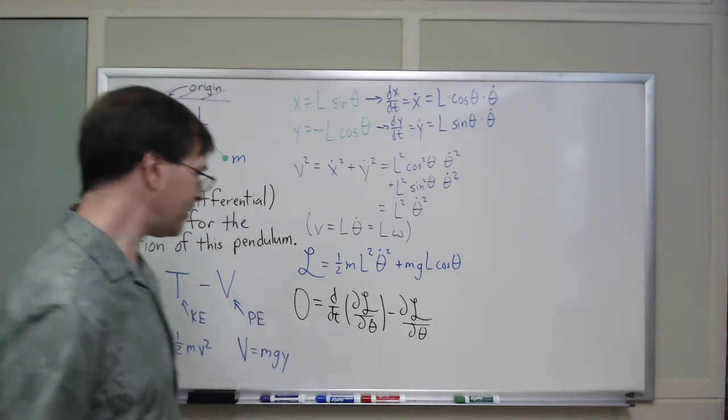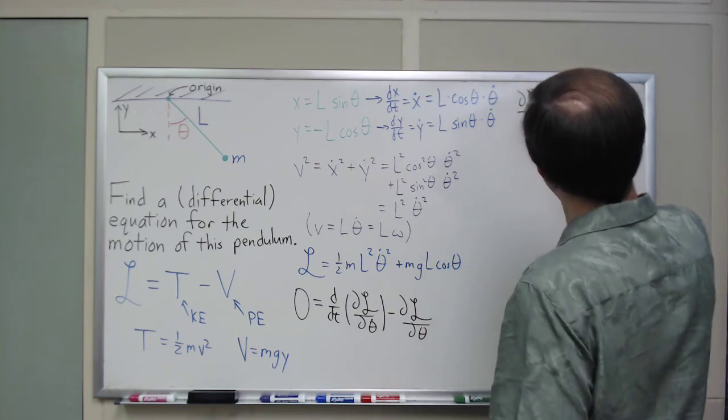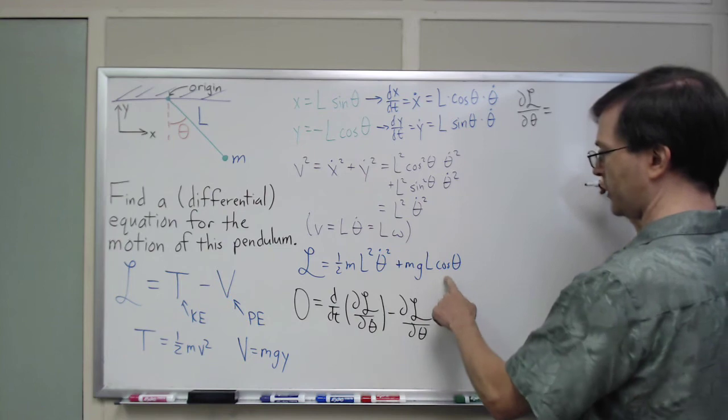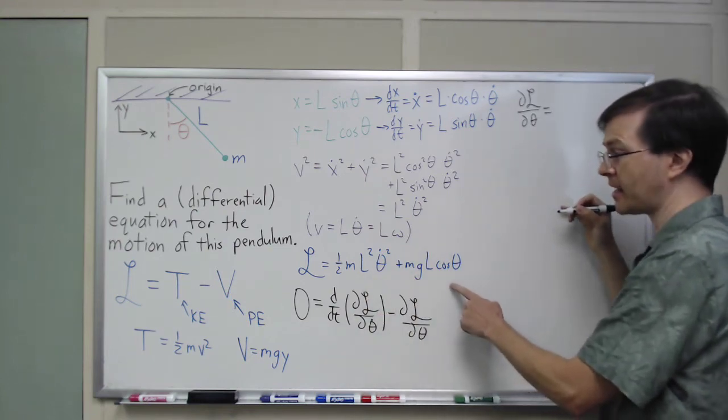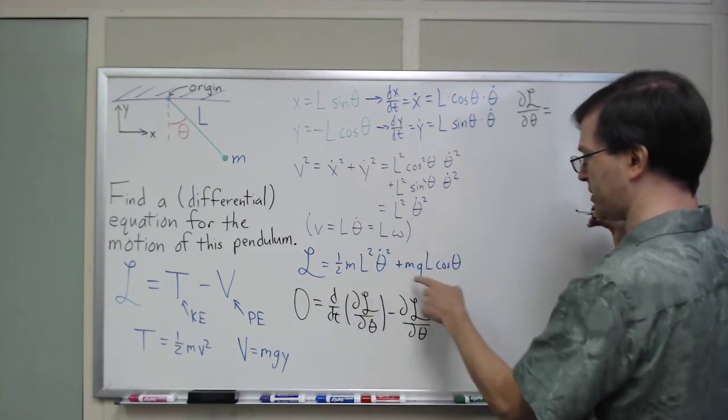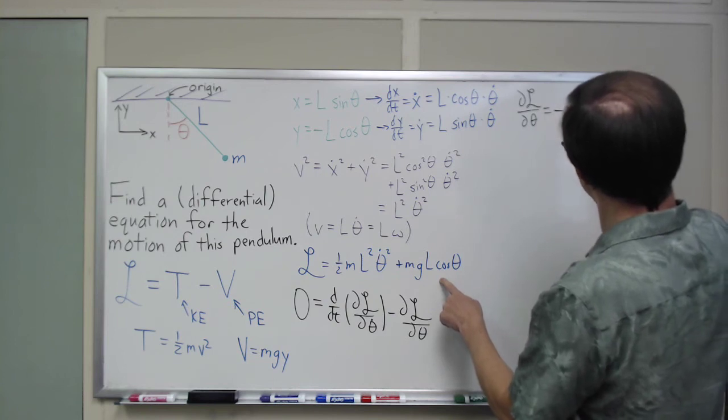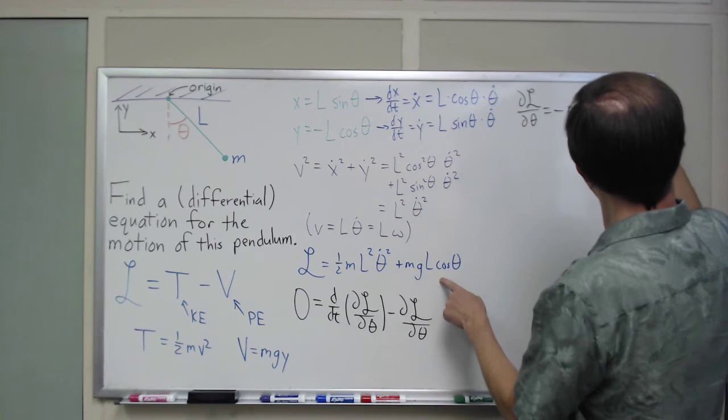What's this give me? Well, dL d theta is just, where am I, dL d theta, there's only one theta here. Remember, theta and theta dot are treated as independent variables in this formulation. dL d theta is just zero minus, minus mg length sine theta.